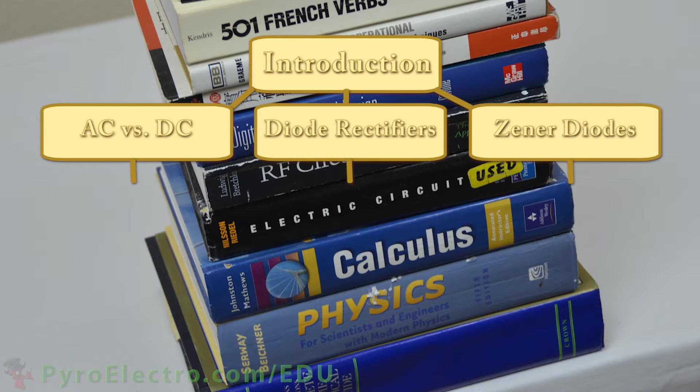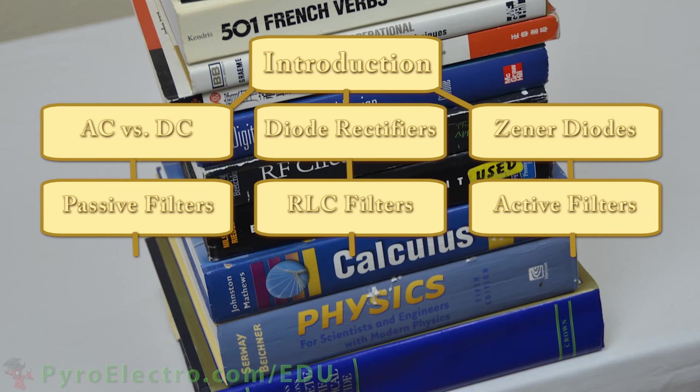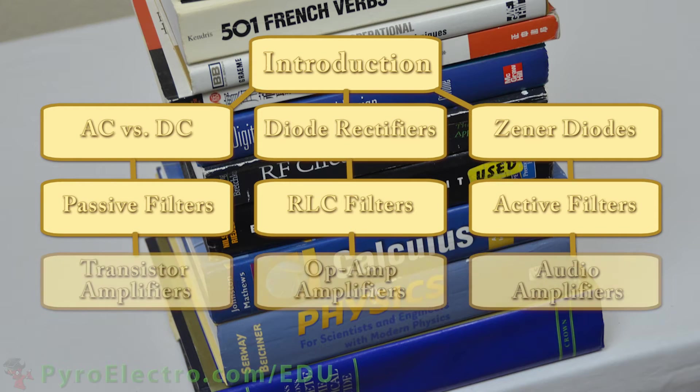Next, we look at different types of active and passive filters in three lessons. And in the final three lessons, we will take a look at how to build amplifiers.